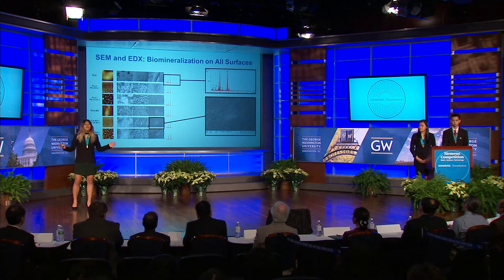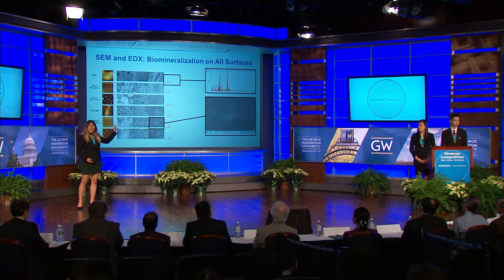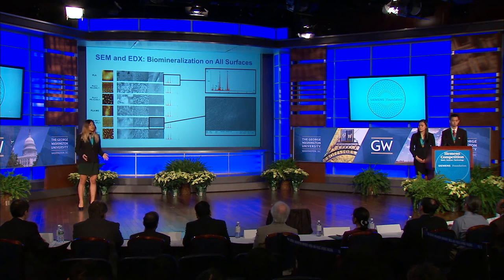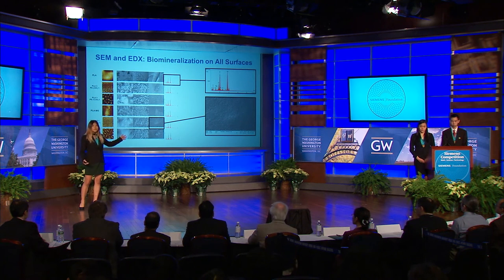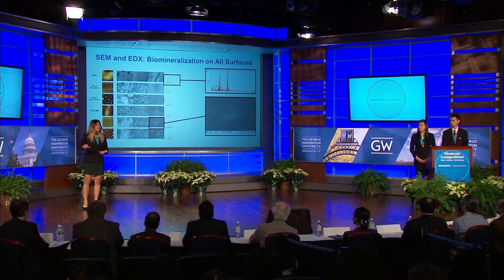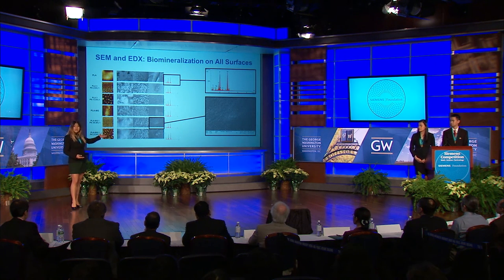All SEM images indicated varying levels of biomineralization on each surface. PLA surfaces characterized by bumps displayed non-uniform biomineralization indicating inefficient differentiation of DPSCs. On the other hand, our porous, dentin-like substrate, as represented by the fifth row of images and the enlarged image, was characterized by directional fiber-like arrangements and displayed the highest level of uniform biomineralization. Further EDAX analysis confirmed the presence of hydroxyapatite, which is a calcium phosphate mineral found in bone that signifies osteogenic differentiation.